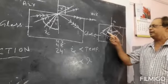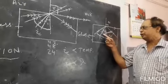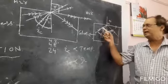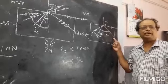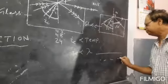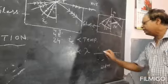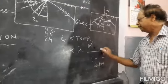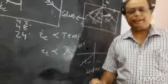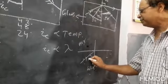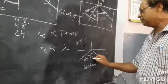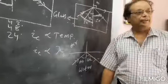For example, if the angle of incidence is 50 degrees in glass (critical angle 42°), the reflected angle will also be 50 degrees and light returns to the same medium. Similarly for water (critical angle 48°), if the angle of incidence is 60 degrees, it will return to the same medium and the angle of reflection will also be 60 degrees.